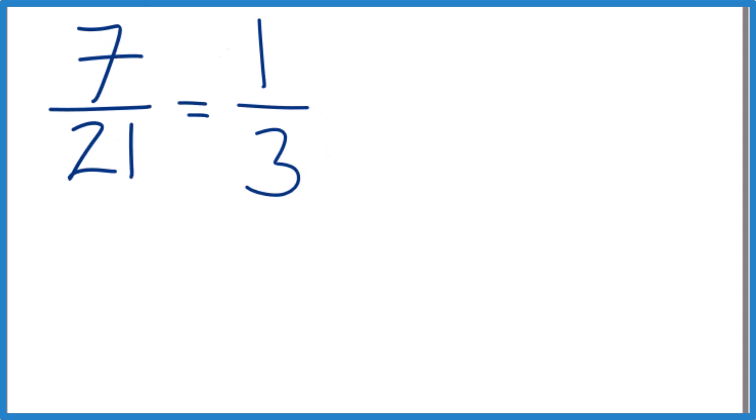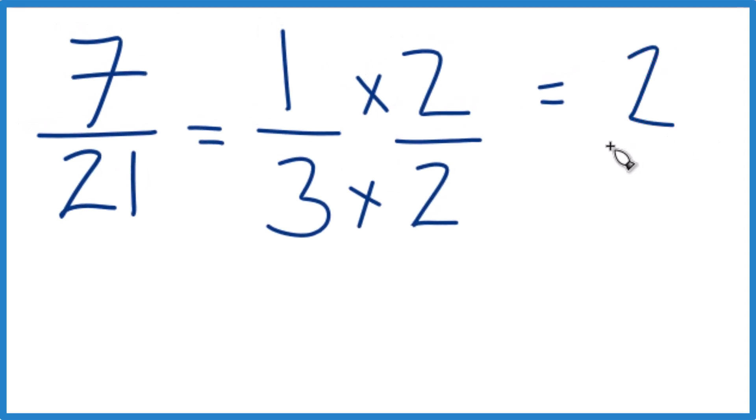If you need help, there's a link to a video on simplifying fractions at the end of this one. And if we want another equivalent fraction, let's do this. 1 times 2 is 2. 3 times 2 is 6. 2 sixths, that's an equivalent fraction to one-third and to 7 over 21.